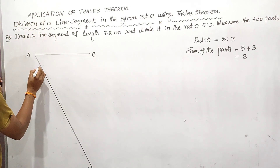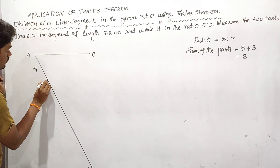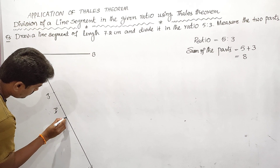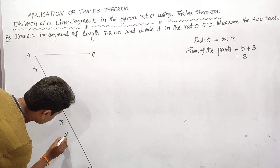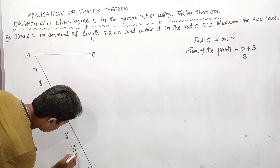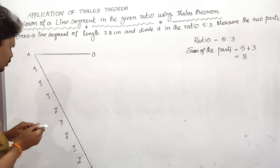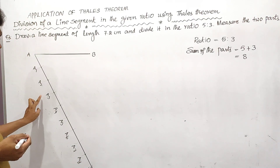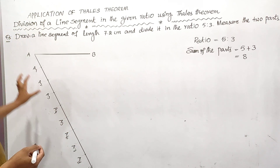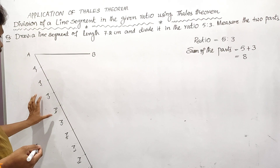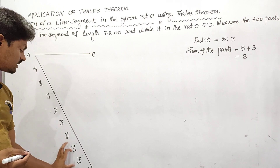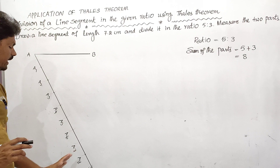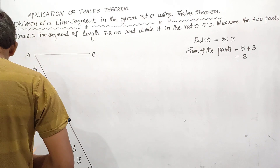I have marked off 8 points on the ray AX: A1, A2, A3, A4, A5, A6, A7, A8. The condition is that AA1 equals A1A2 equals A2A3 and so on up to A7A8 — the distance between any two consecutive points must be equal.